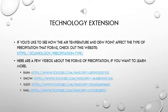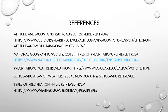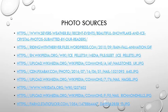Now that we've reached the end of this presentation, I've included some technology websites that you can use to learn more about the forms of precipitation. If you'd like to see how air temperature and dew point affect the type of precipitation that forms, check out the first link. I've also included some more videos about each form of precipitation if you'd like to learn more. Thank you.